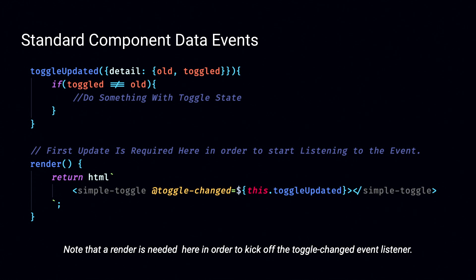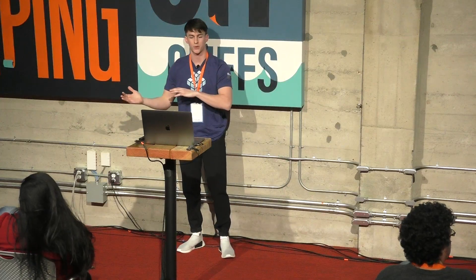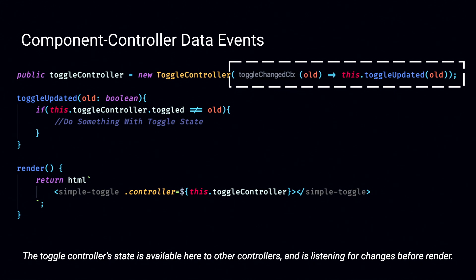This is a standard component data event. You have a toggle, and that toggle has changed from true to false. To do that, you need a render, add an event listener — simple toggle has a toggle-changed event which binds to the toggle-updated function. Then you extract the detail of that custom event and get the value. We send old and new values because we're a change-driven architecture, as well as LitElement — that's where we got the inspiration. What happens if you need to listen to those changes without a render? You set up a new toggle controller, pass in a toggle-change callback which fires locally and calls toggle-updated. Render is separate, and you don't have to wait on render to get those updates and affect other data and other controllers.